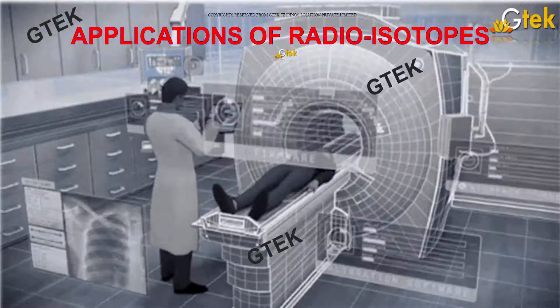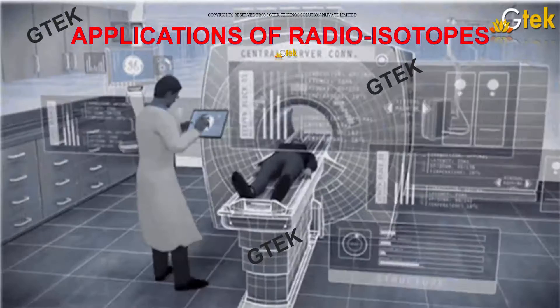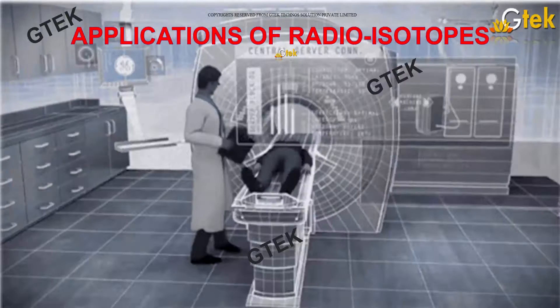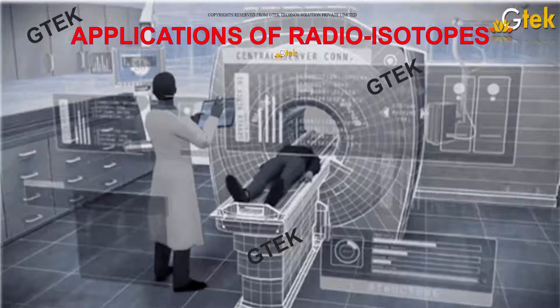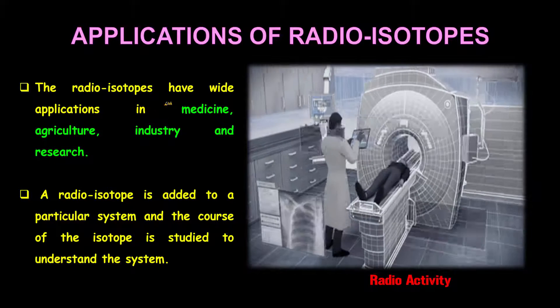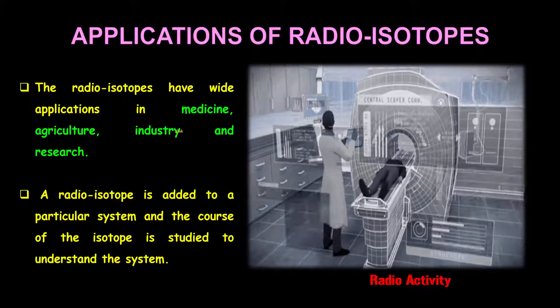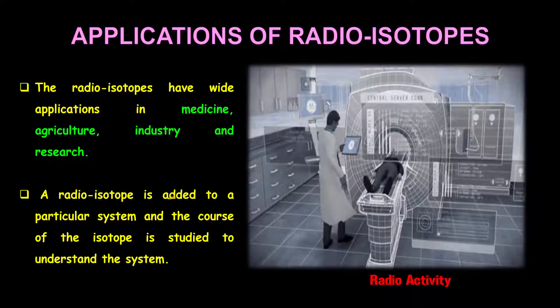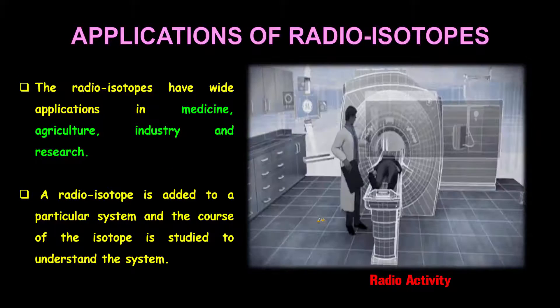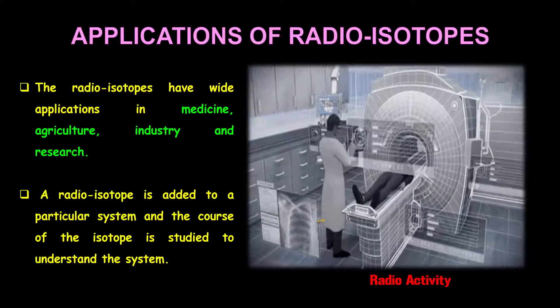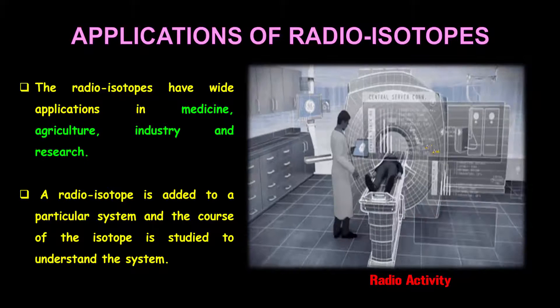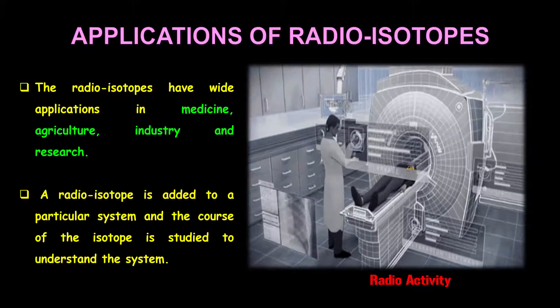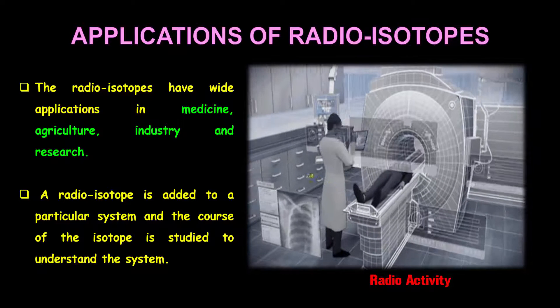Let's look into the applications of radioisotopes. Radioisotopes are really useful in the medical industry and have wide applications in medicine, agriculture, industry, and research. A radioisotope is added to a particular system and the course of the isotope is studied to understand the system. This is a picture of MRI scanning — a three-dimensional view for which radioactivity is used to scan details.